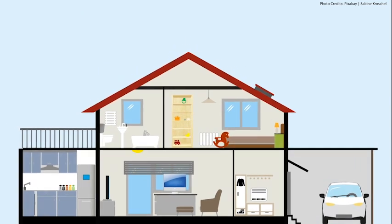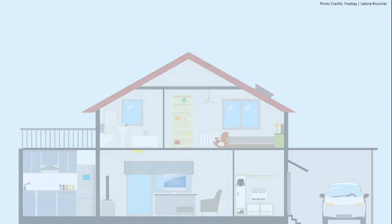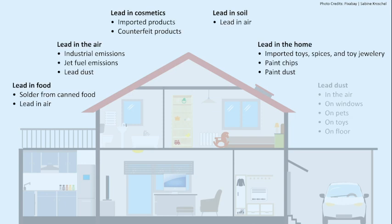Sources of lead all over the home environment shows a cross-sectional view of a two-story house with text listing the different sources. Lead exposure can come from all over a child's home environment. It can be in food from cans if lead solder was used, or from lead dust in the air. It can be in the air from industrial emissions or lead dust from lead paint on windows. It can get into the soil from lead in water or fuel, and from other sources such as toys, jewelry, or paint. Lead dust on the floor can also be picked up by the family pet. Understanding the different avenues for lead exposure is the first step in preventing lead poisoning.